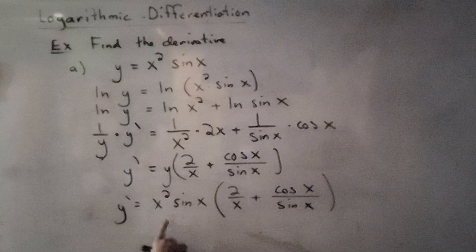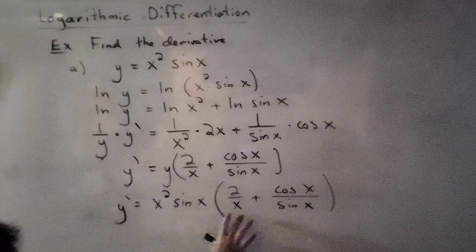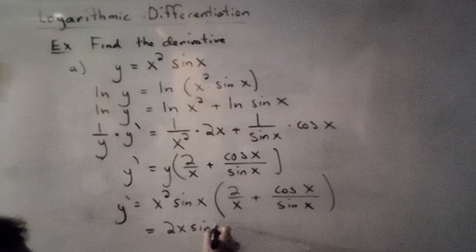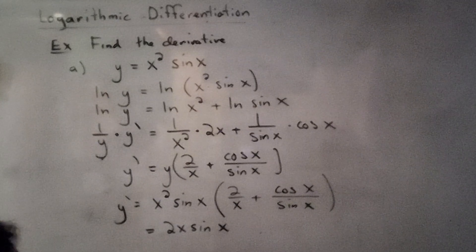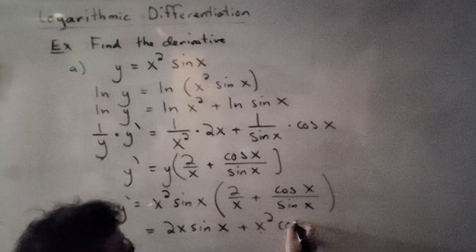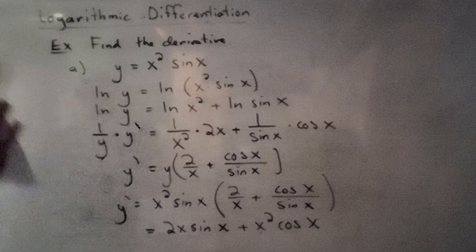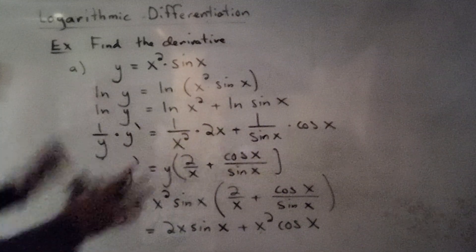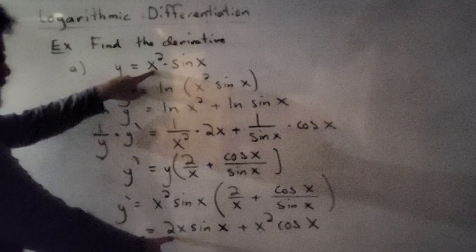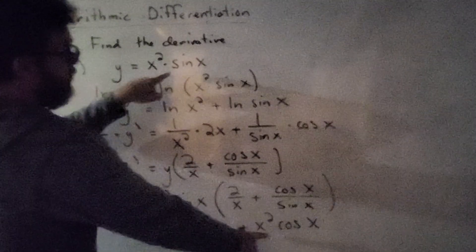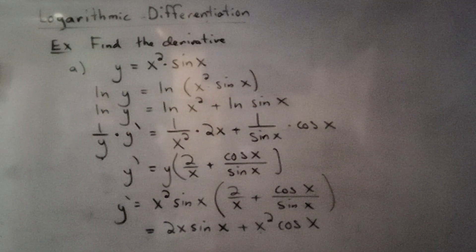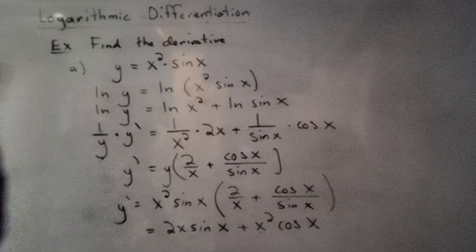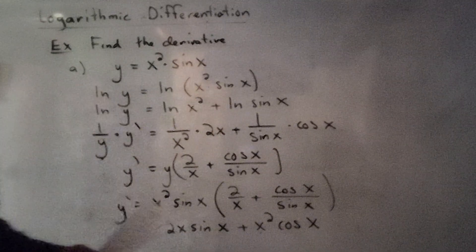So y prime is y times that expression. Since y is x squared sine of x, we rewrite: y prime equals x squared sine of x multiplied by 2 over x plus cosine of x over sine of x. Distributing, the x cancels giving 2x·sin(x), and the sine of x cancels giving plus x squared cosine of x. This matches what you'd get directly using the product rule, confirming logarithmic differentiation works.